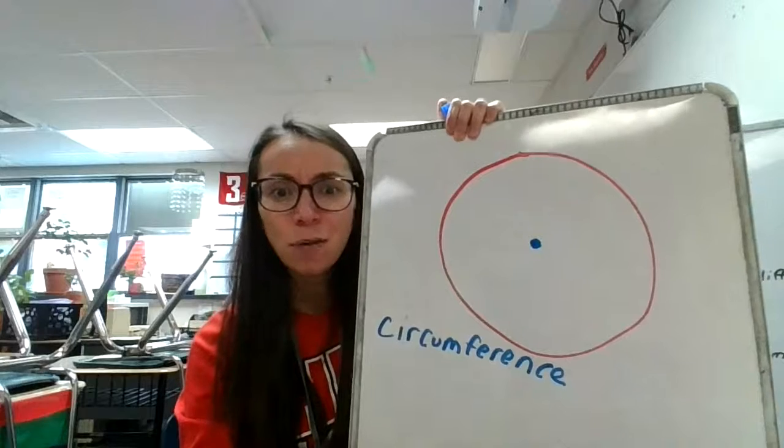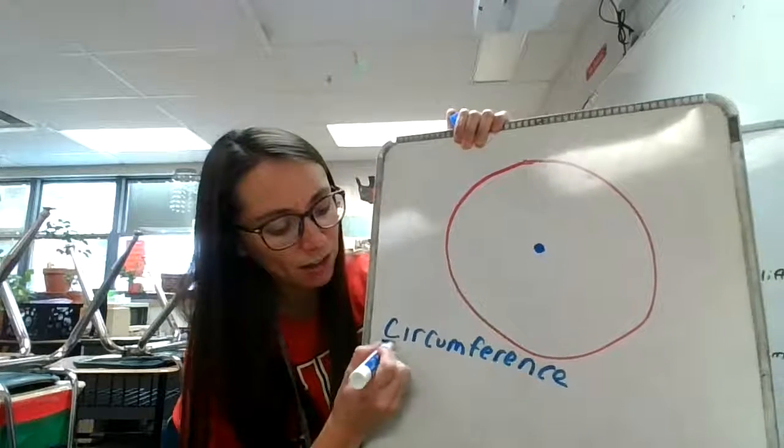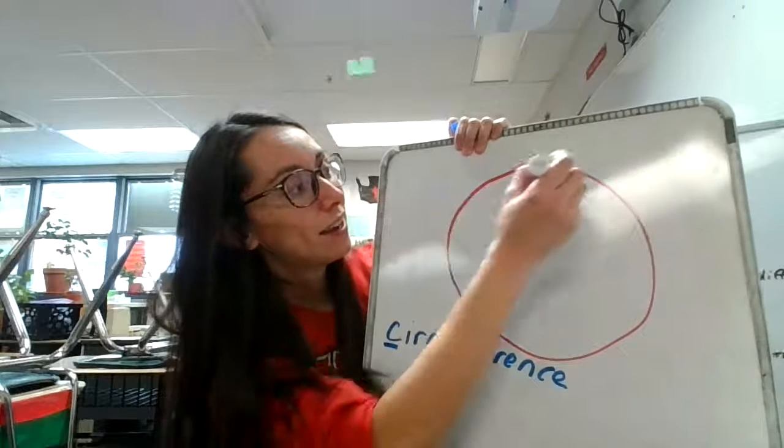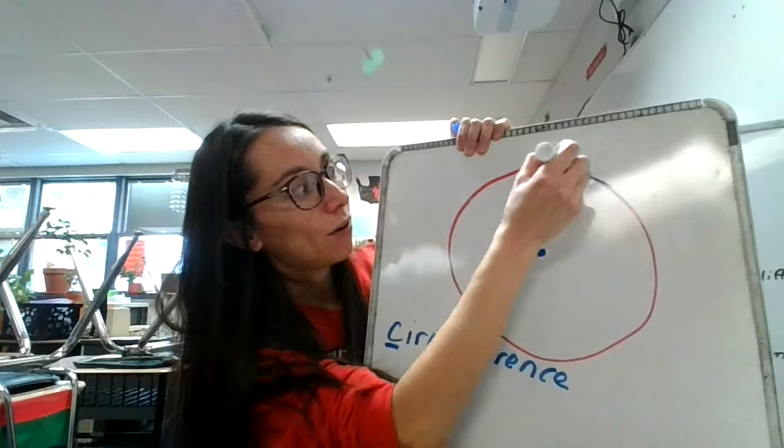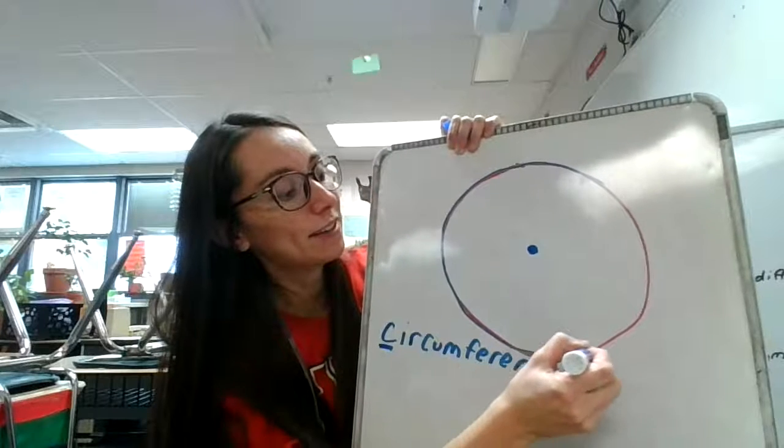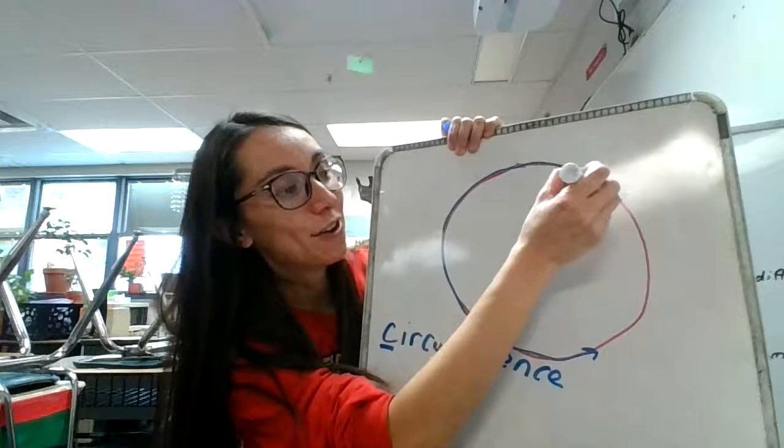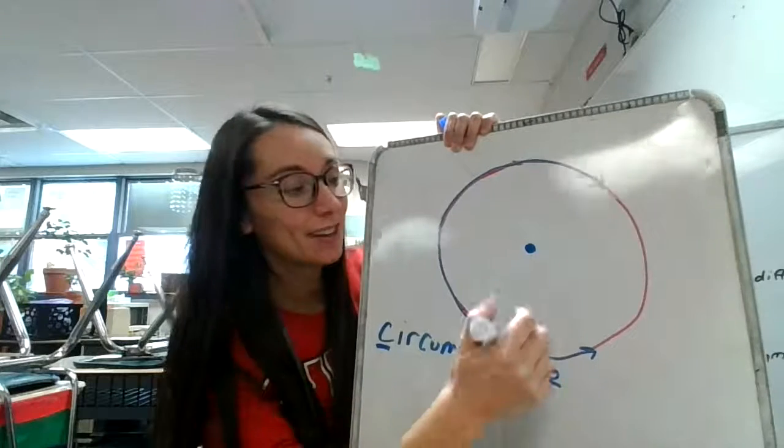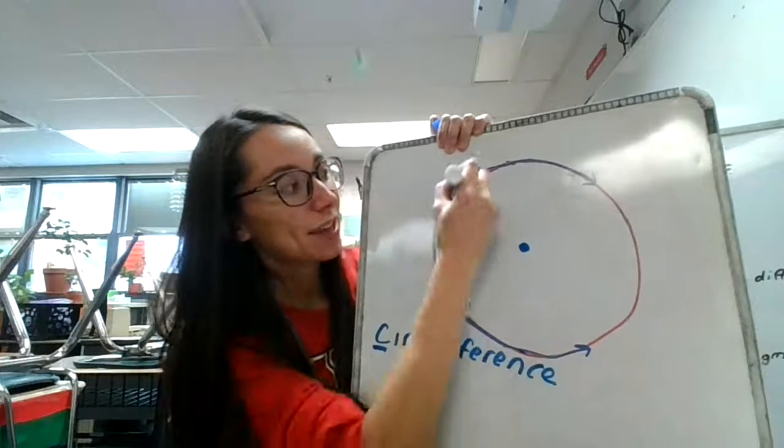Circumference, what does it start with? What letter? Oh yeah, the letter C. So circumference is found like this. Oh look, it's the letter C. Circumference is the distance all the way around a circle. See how that formed the letter C? So yeah, all the way around the circle is the circumference.